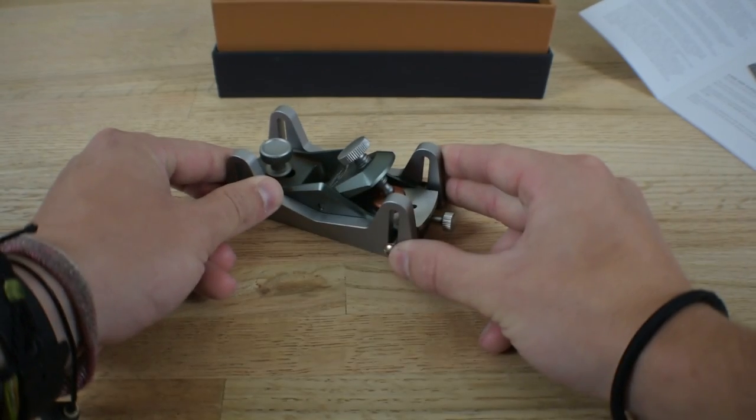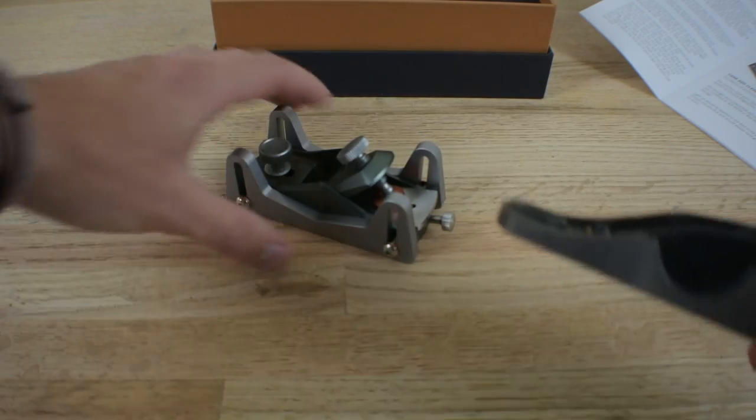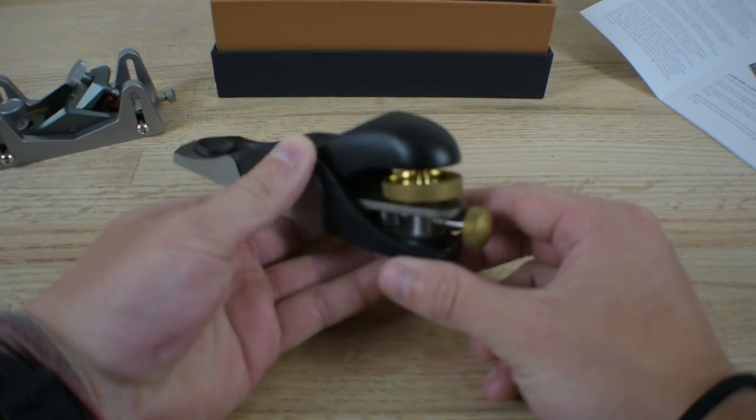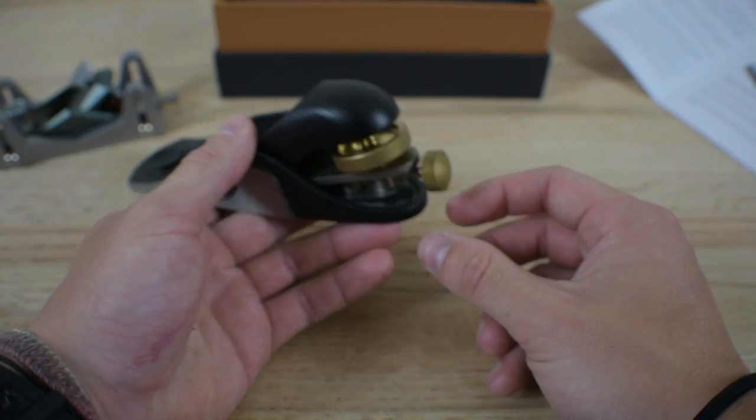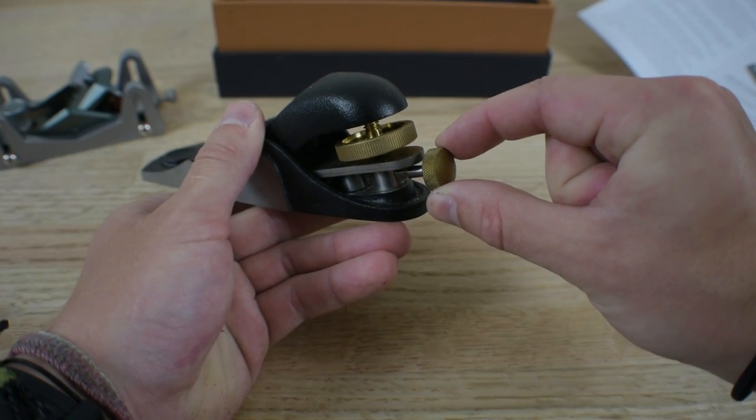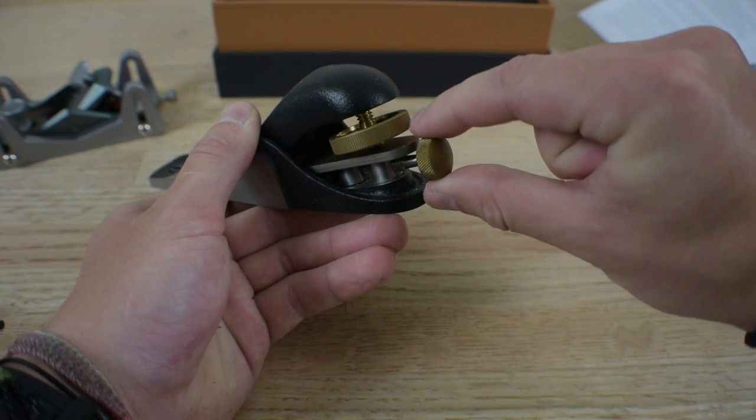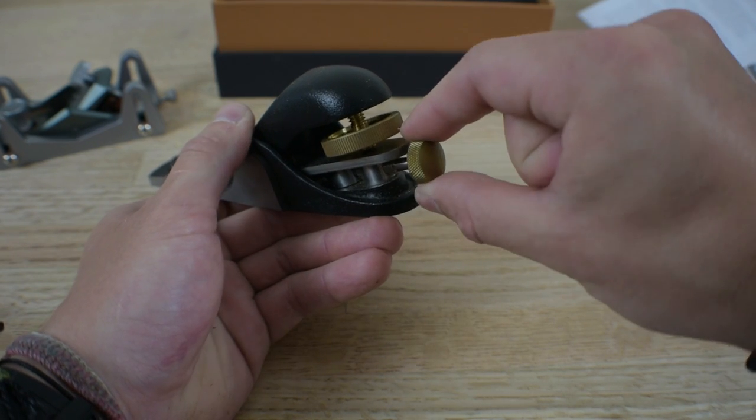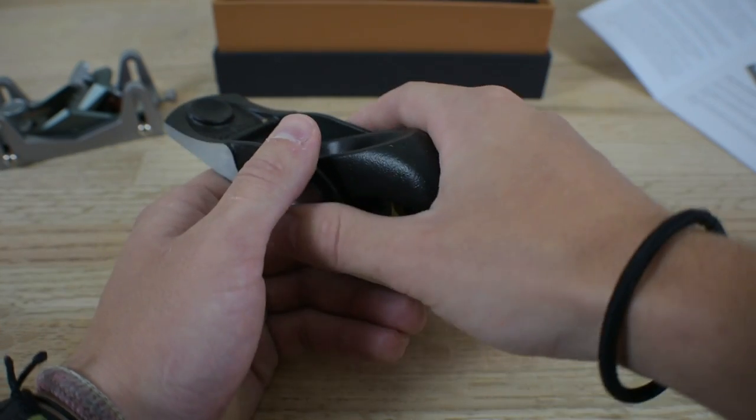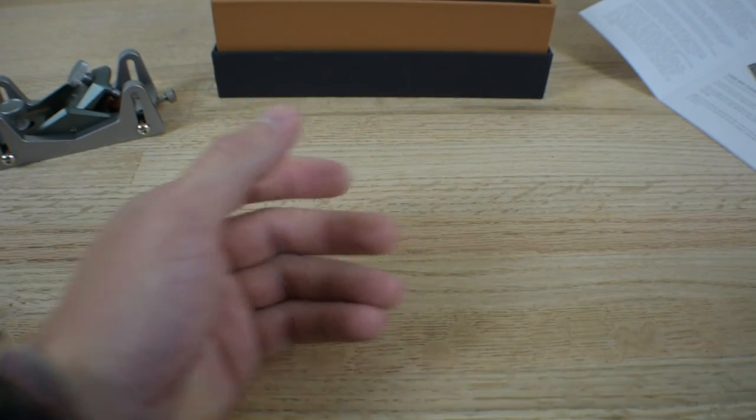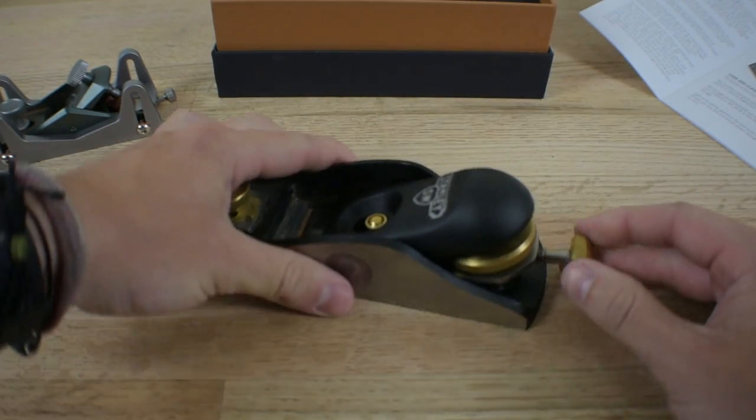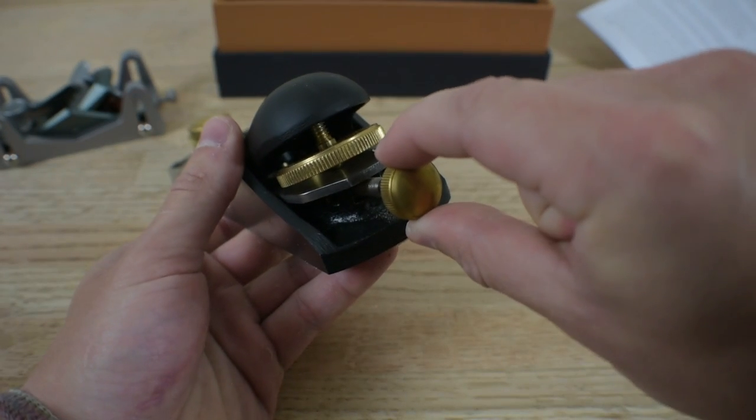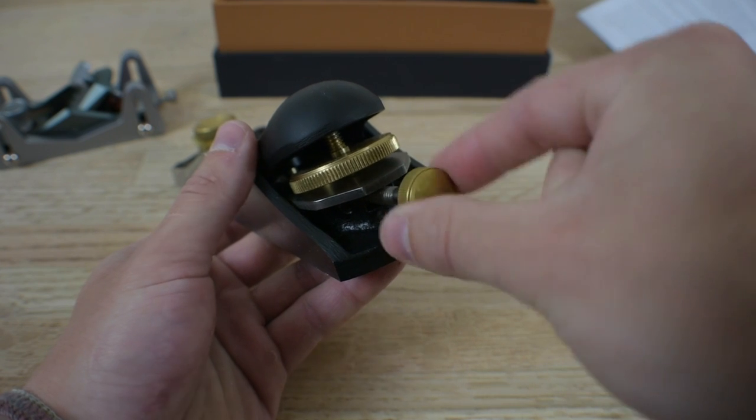If you're wanting a comparison, here is the Veritas apron plane. That's by far my favorite tool that I have. The blade is engaged now, so not quite a quarter of a turn.